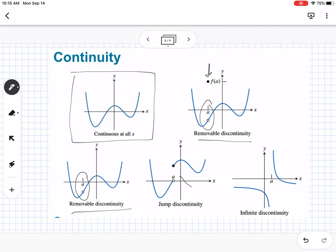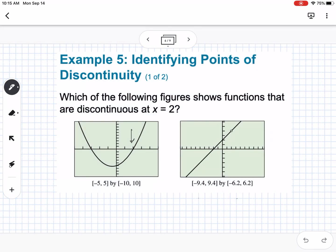You could have a jump, like on this one, and then you could have infinite discontinuity, which is like our hyperbola that we were talking about. So you can see there's clearly a break in the graph there. Okay, so the next one is asking us, which of the following figures shows functions that are discontinuous at x equals 2? So if you see the graph on the left, we don't have an issue at x equals 2. This is where our graph is at x equals 2. There's no hole there, so this graph is continuous. But then we do have an issue at x equals 2 on our graph at the right. So you can see there's a hole in the graph right there. So this one would be discontinuous.